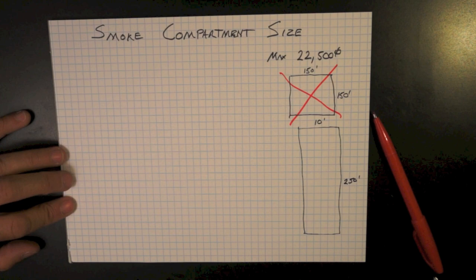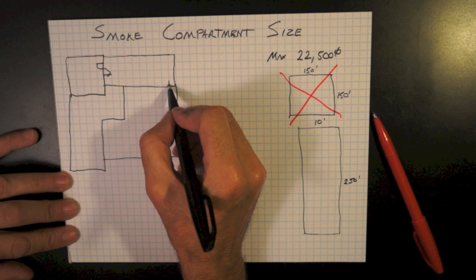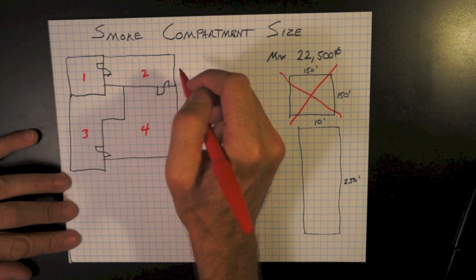Let's start off by drawing some smoke compartments of varying sizes. Let's also add some communicating doors, cross-corridor doors, between our smoke compartments. Let's label them Smoke Compartment 1, 2, 3, and Smoke Compartment 4.